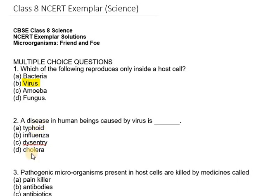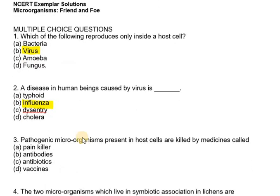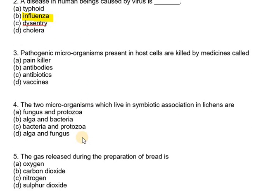Out of the four options, the answer is influenza. Influenza is caused by a virus. Now question number three says: pathogenic microorganisms present in host cells are killed by medicines called — painkiller, antibodies, antibiotics, or vaccines? The answer is antibiotics. Pathogenic microorganisms present in host cells are killed by medicines called antibiotics only.